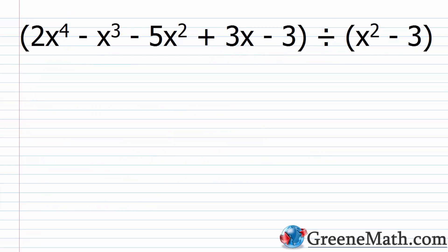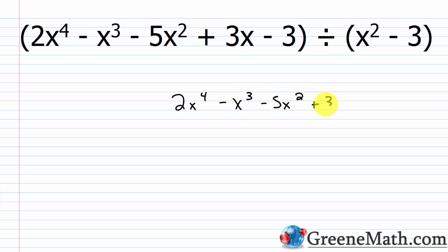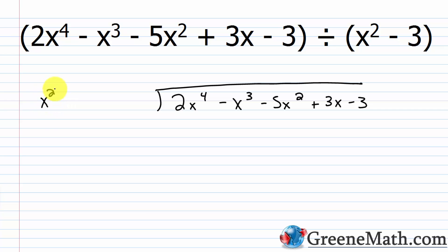Let's do one final problem. The only difference here is I'm going to put the missing term in the divisor instead of the dividend. I have 2x to the fourth power minus x cubed minus 5x squared plus 3x minus 3, divided by x squared minus 3. My divisor is x squared minus 3, and I'm missing my x to the first power, so I'll put plus 0x, then minus 3.